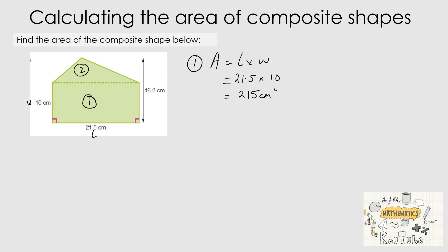For shape 2, the triangle above, the formula is area equals one half multiplied by the base multiplied by the height. The base is the dotted line at the bottom of the triangle, which matches the width of the rectangle — so the base is also 21.5 cm. We don't yet have the height, which is the vertical dotted line shown in yellow.